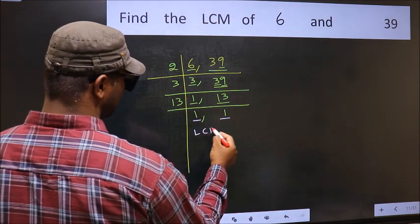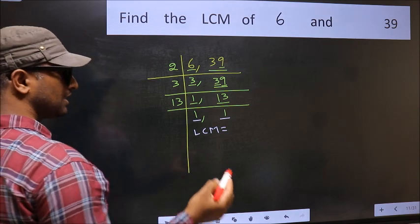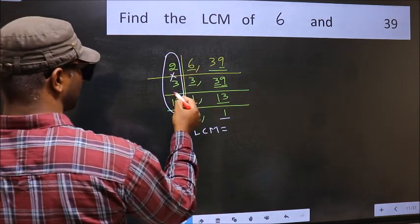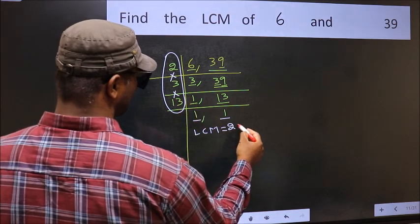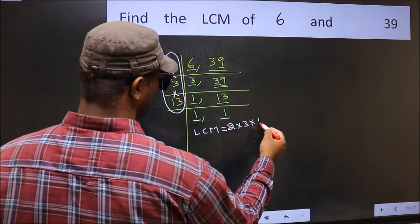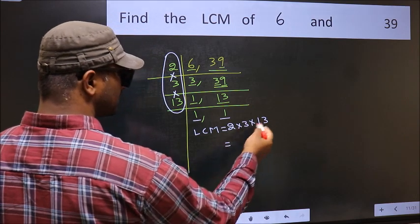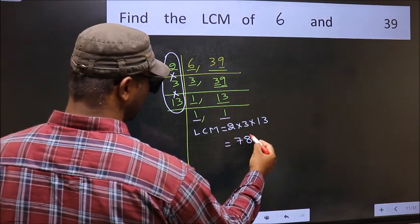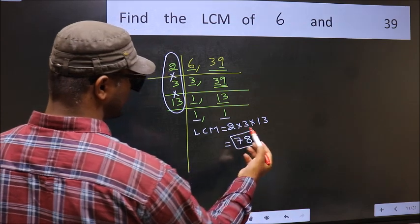So our LCM is the product of these numbers. That is 2 into 3 into 13. When we multiply these numbers, we get 78 is our LCM.